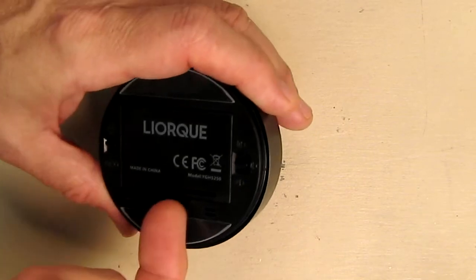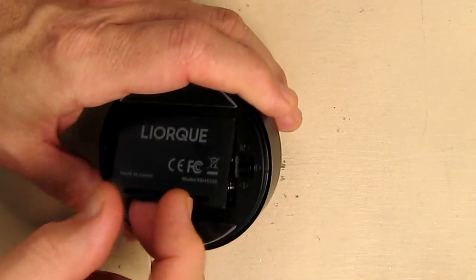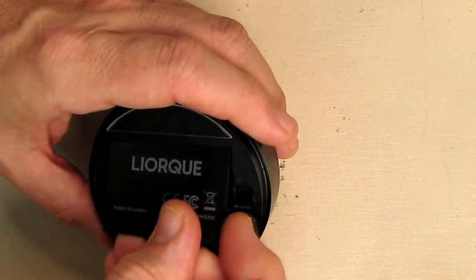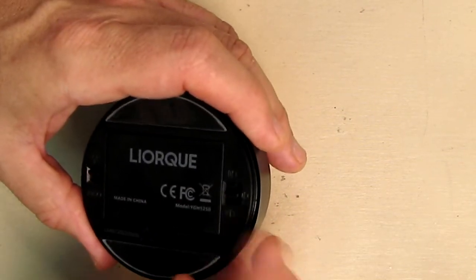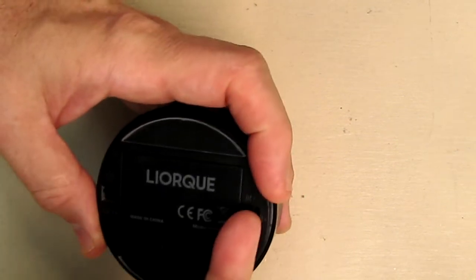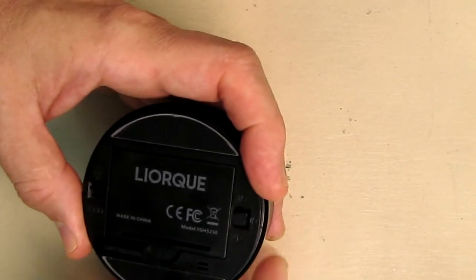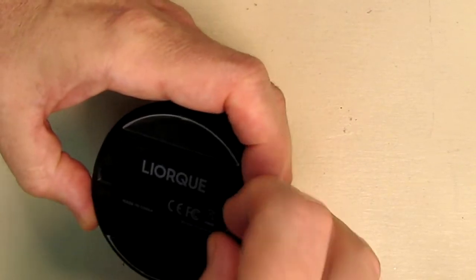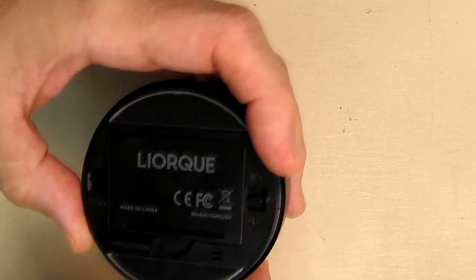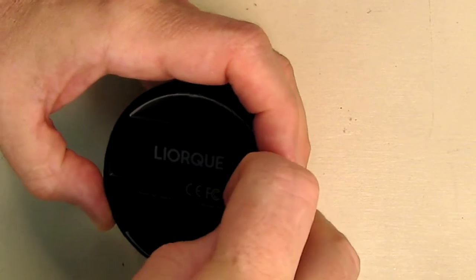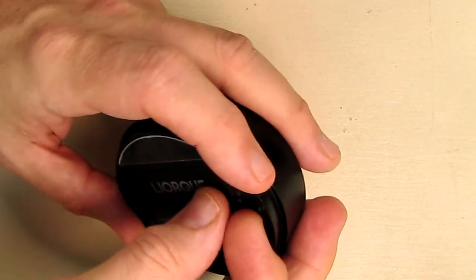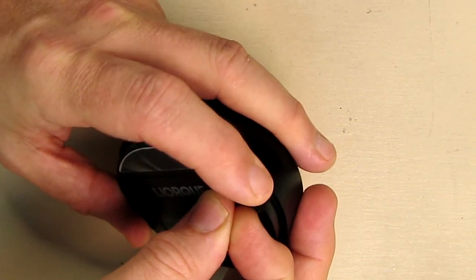Looking on the back it has the battery holder right there and the three AAAs were included which is really a nice touch. And here you have a switch which is up as loud and that's where you're going to hear the loudest sound. Then you have a mid position and that's lower. Then you can actually turn it off completely. So we're going to keep it in the middle position right there for this video review.